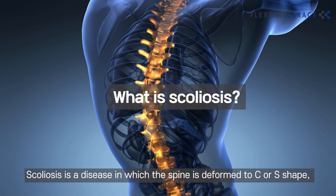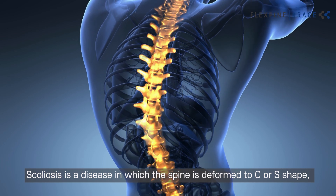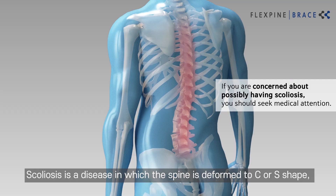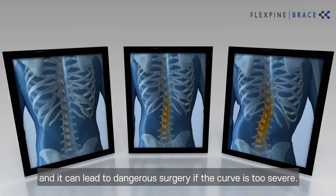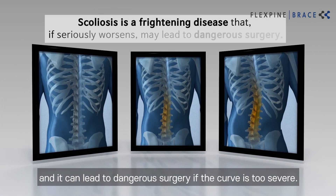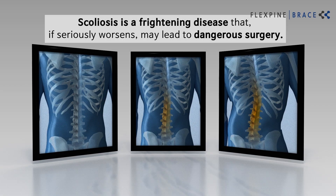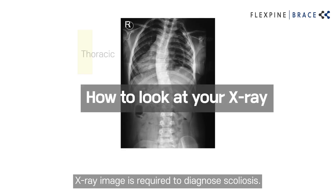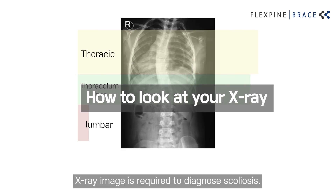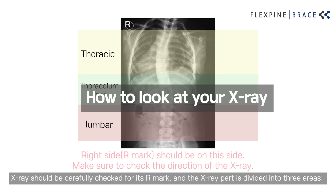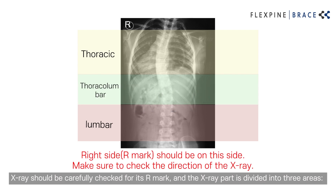Scoliosis is a disease in which the spine is deformed to a C or S shape, and it can lead to dangerous surgery if the curve is too severe. An X-ray image is required to diagnose scoliosis. The X-ray should be carefully checked for its orientation mark, and the X-ray area is divided into three regions.